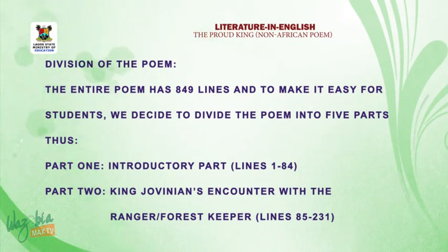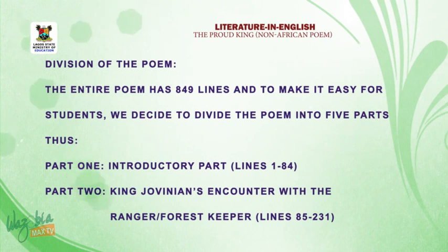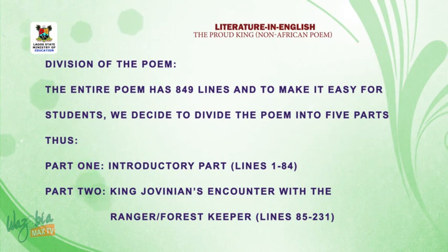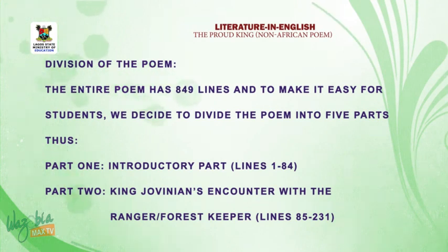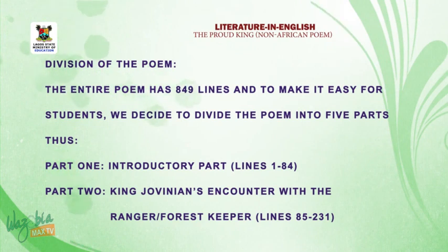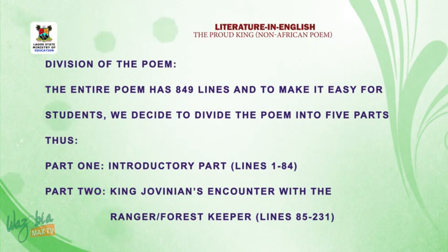Part one covers lines 1 to 84. It describes the king's gigantic palace, his pride, and everything he used to manipulate the people in his kingdom. One day, he decided to go on a hunting expedition with his entourage. He left his entourage and went into the bush, saw a big river and decided to swim. Before he could complete his swimming, all his royal apparel, his cloth, and his horse were taken away.